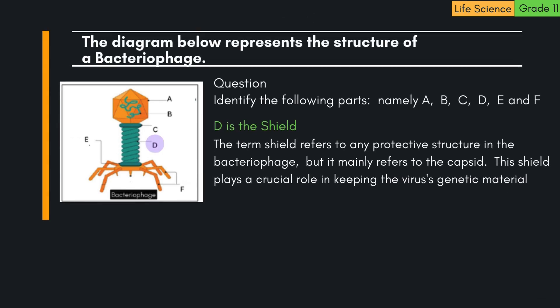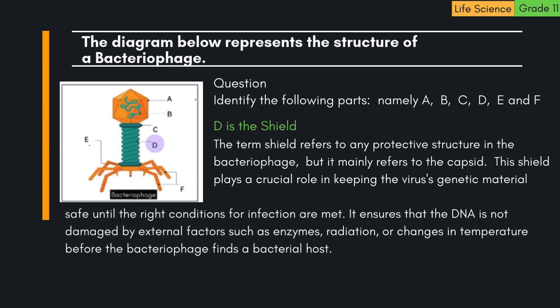D is the shield. The term shield refers to any protective structure in the bacteriophage, but it mainly refers to the capsid. This shield plays a crucial role in keeping the virus's genetic material safe until the right conditions for infection are met. It ensures that the DNA is not damaged by external factors such as enzymes, radiation, or changes in temperature before the bacteriophage finds a bacterial host.